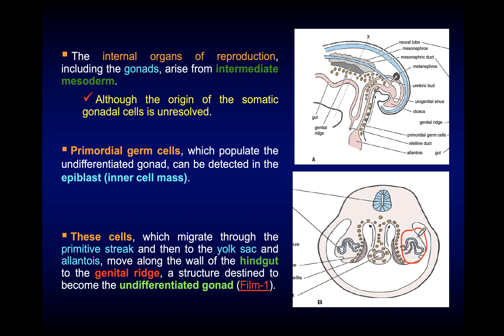In the lateral portion of the urogenital ridge there is development of the renal system, whereas in the medial portion there is formation of the gonadal ridge, which will become the future testes or ovaries. At the beginning, there is a thickening forming the genital ridge, with the mesonephros in the lateral surface forming mesonephric tubules. These gonads will contain primordial germ cells.